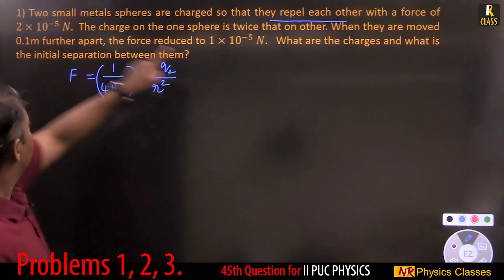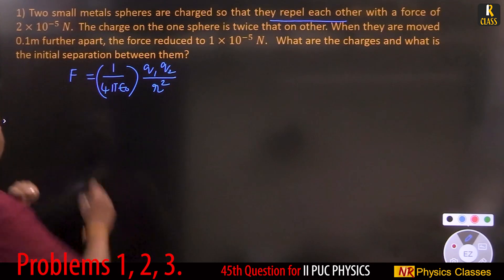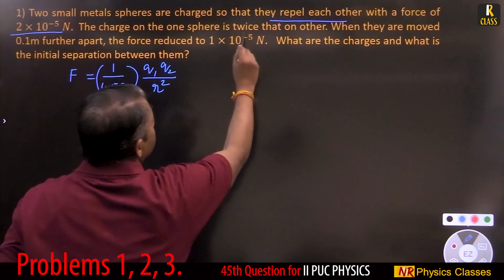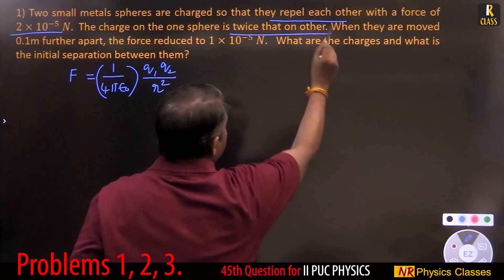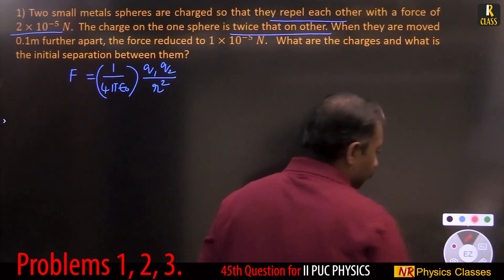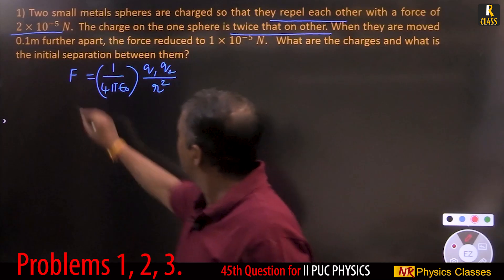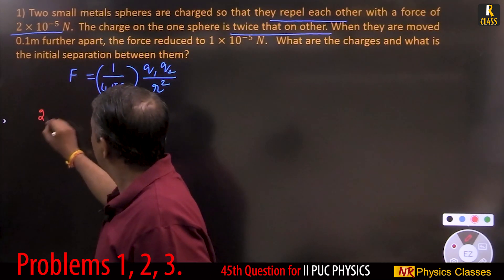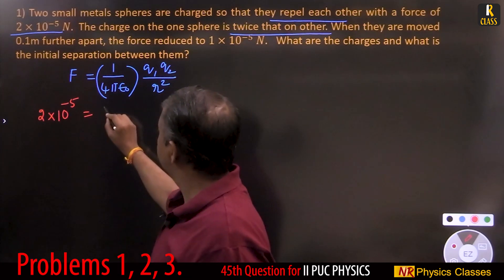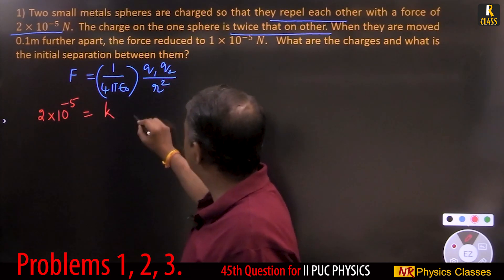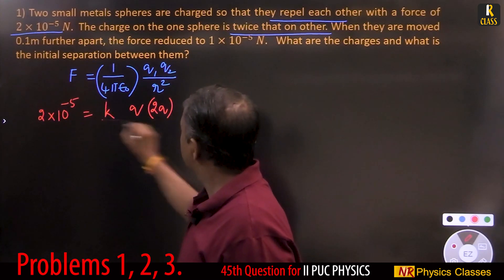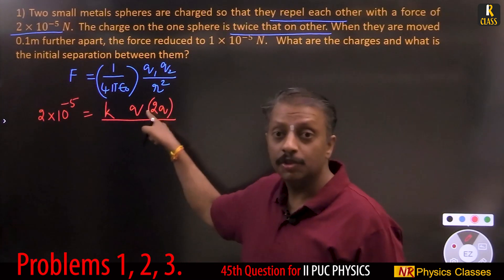The spheres repel each other with a force of 2×10⁻⁵ Newton. The charge on one sphere is twice that on the other. So let us write the numbers: force = 2×10⁻⁵, first charge is q, second charge is 2q because it is mentioned that one charge is twice the other.